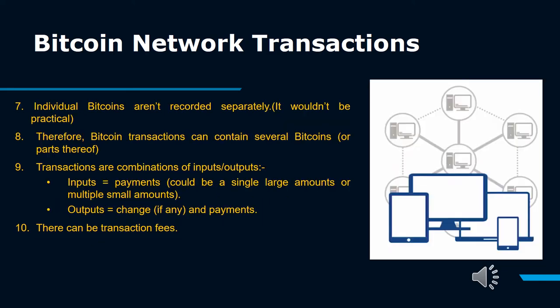Individual Bitcoins aren't recorded separately — it wouldn't be practical. Therefore, Bitcoin transactions can contain several Bitcoins or parts thereof. Transactions are combinations of inputs and outputs. Inputs, as payments, could be a single large amount or multiple small amounts. Outputs is change, if any, and payments.